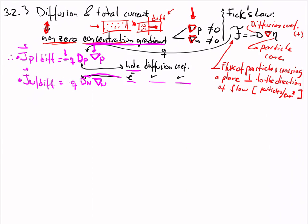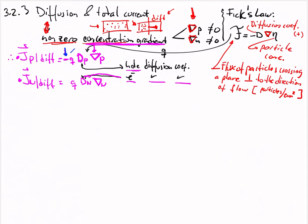For the JP and JN diffusion current densities: notice carefully that the hole formula has a negative sign. The charge q, the hole diffusion coefficient Dp, and the gradient ∇p give JP. For electrons it's q, Dn, and ∇n giving JN. Don't forget that ∇p is the concentration gradient of holes and ∇n is the concentration gradient of electrons.